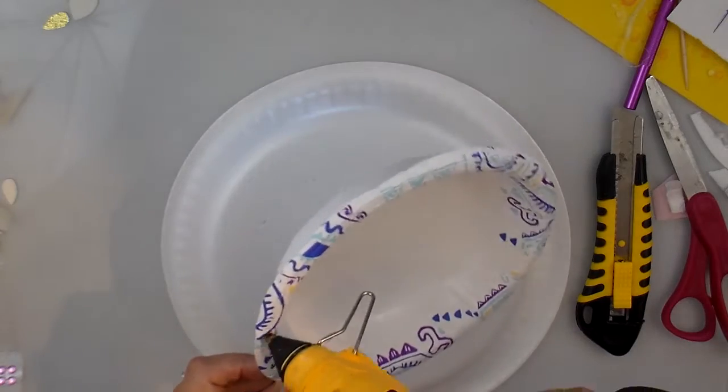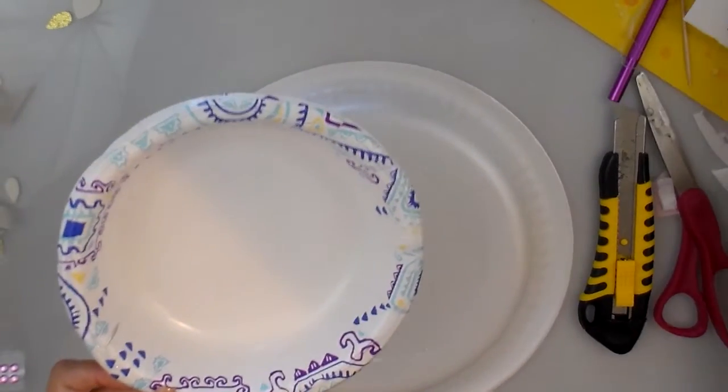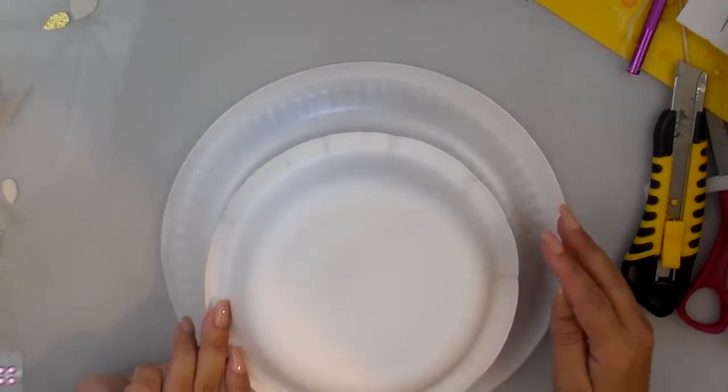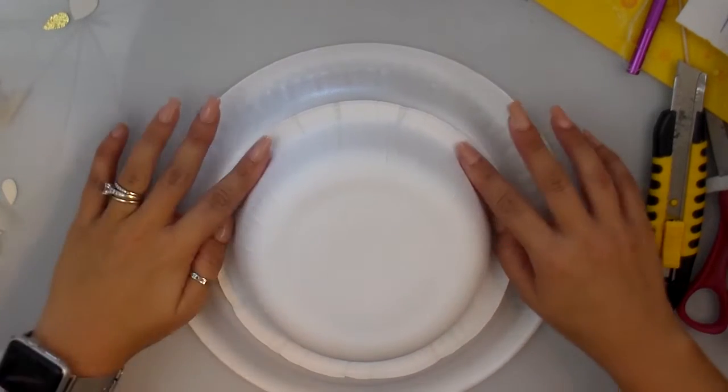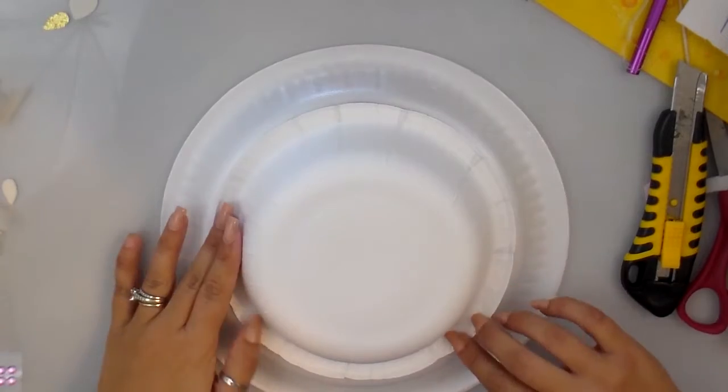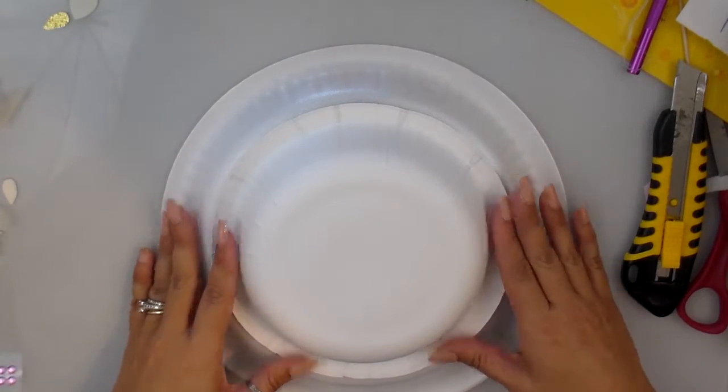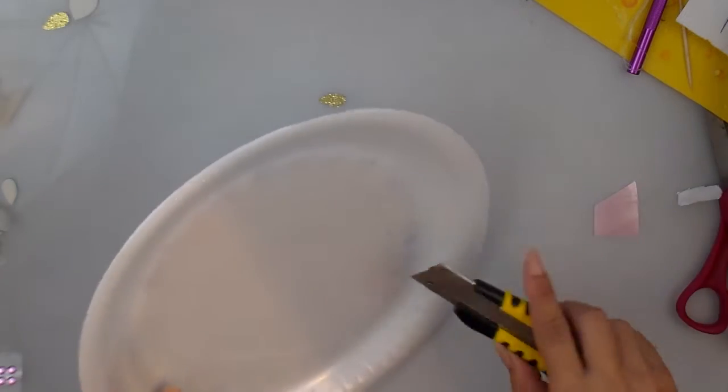You can find them both at the dollar store, the Dollar Tree. I will try to leave the link below, but if you go to the Dollar Tree you'll find them. We have the foam one on my table, and then we're going to hot glue the bowl paper plate on top.